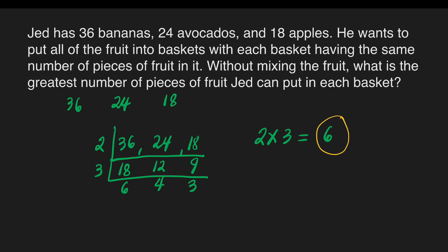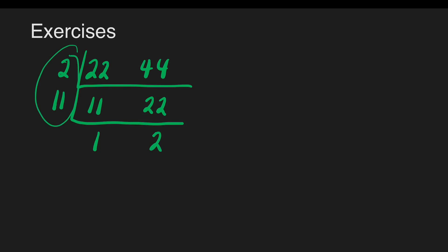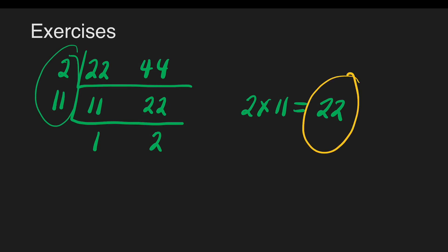It means 6 is the greatest number of pieces of fruit Jed can put in each basket. Now let's have some exercises. Let's get the GCF of the following numbers. The first one: 22 and 44. What number can we divide 22 and 44? Let's have 2. 22 divided by 2 is equal to 11, and 44 divided by 2 is equal to 22. Do we still have a prime number that can divide both 11 and 22? Yes, that's 11. 11 divided by 11 is 1, and 22 divided by 11 is 2. There's no more. So 2 times 11 is equal to 22. The GCF of 22 and 44 is 22.